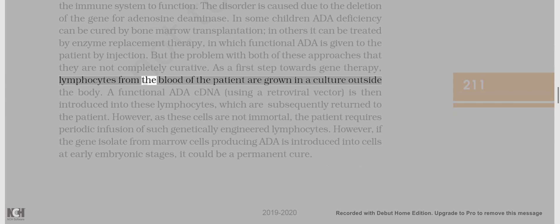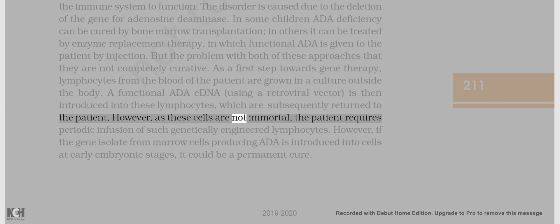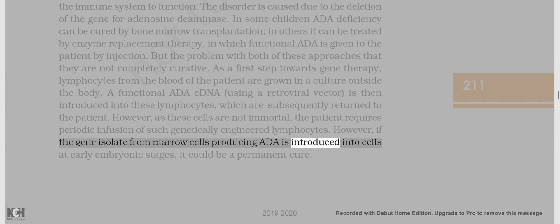As a first step towards gene therapy, lymphocytes from the blood of the patient are grown in a culture outside the body. A functional ADA cDNA, using a retroviral vector, is then introduced into these lymphocytes, which are subsequently returned to the patient. However, as these cells are not immortal, the patient requires periodic infusion of such genetically engineered lymphocytes. However, if the gene isolated from marrow cells producing ADA is introduced into cells at early embryonic stages, it could be a permanent cure.